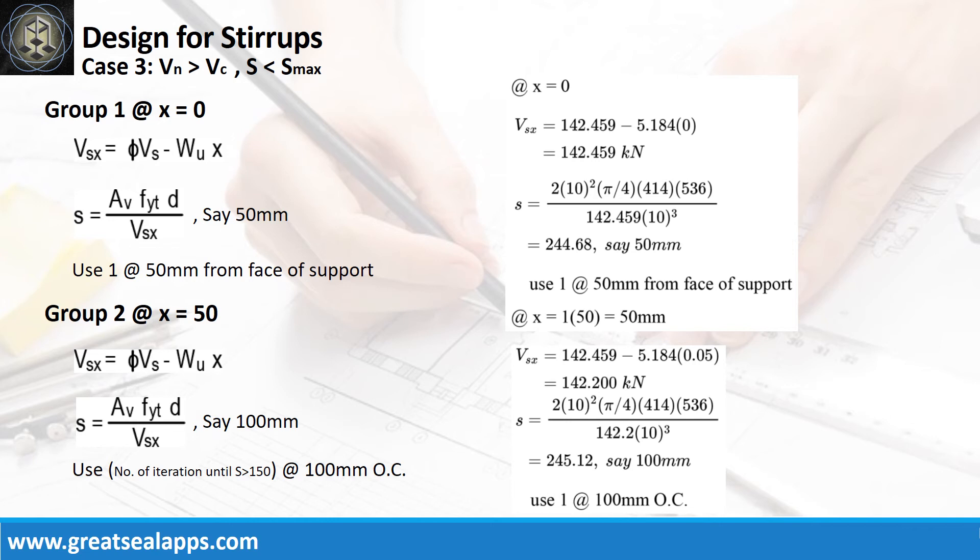For group 2 at x equals 50 millimeters, the web strength is 142.20 kN, with spacing at 245.12 millimeters, use 1 at 100 millimeters.